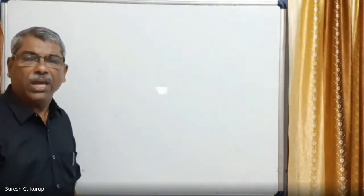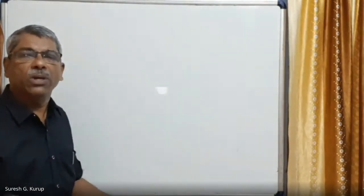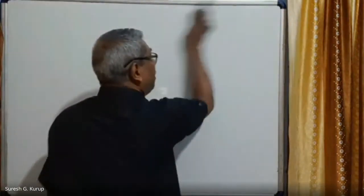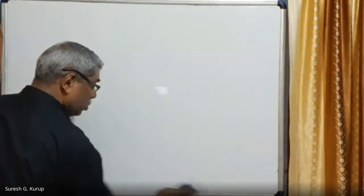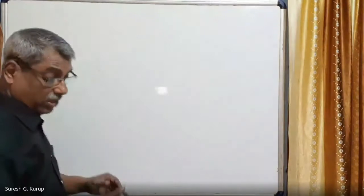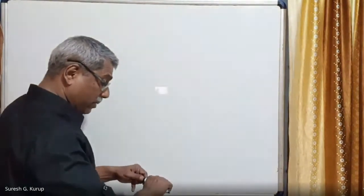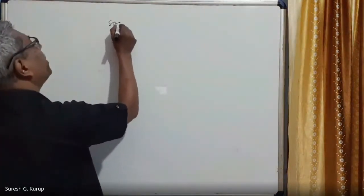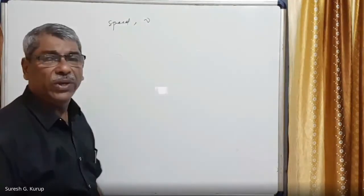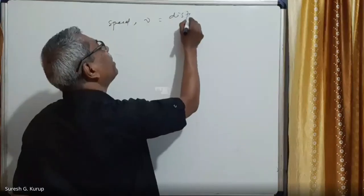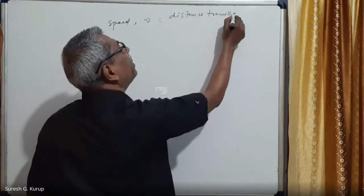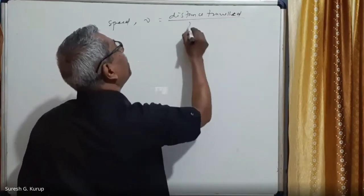Speed is equal to total distance divided by total time, or distance traveled divided by time taken. So v = S / T, where S is the distance traveled and T is the time taken.